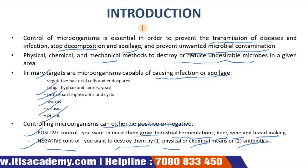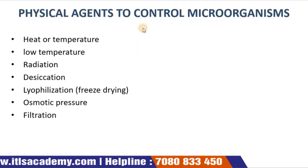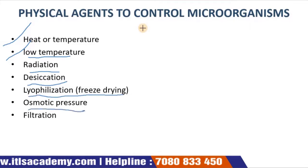Temperature is one of the most important factors dealing with the control of microorganisms. The physical agents used to control microorganisms include: heat or temperature, low temperature, radiation, desiccation, lyophilization or freeze drying, osmotic pressure, and filtration.